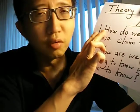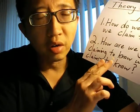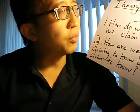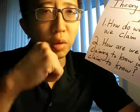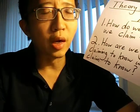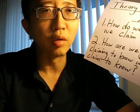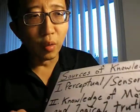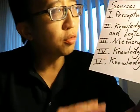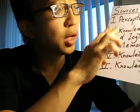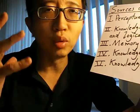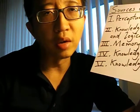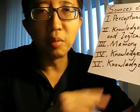In this particular video, I'm just going to touch on the first question, and then in the next video on Descartes, I will touch on the second question, which is how are we justified in claiming to know what we claim to know. So let's start with the first question: how do we know what we claim to know? Generally, we can list five sources of knowledge — five ways by which we come to acquire knowledge about the world and about ourselves.